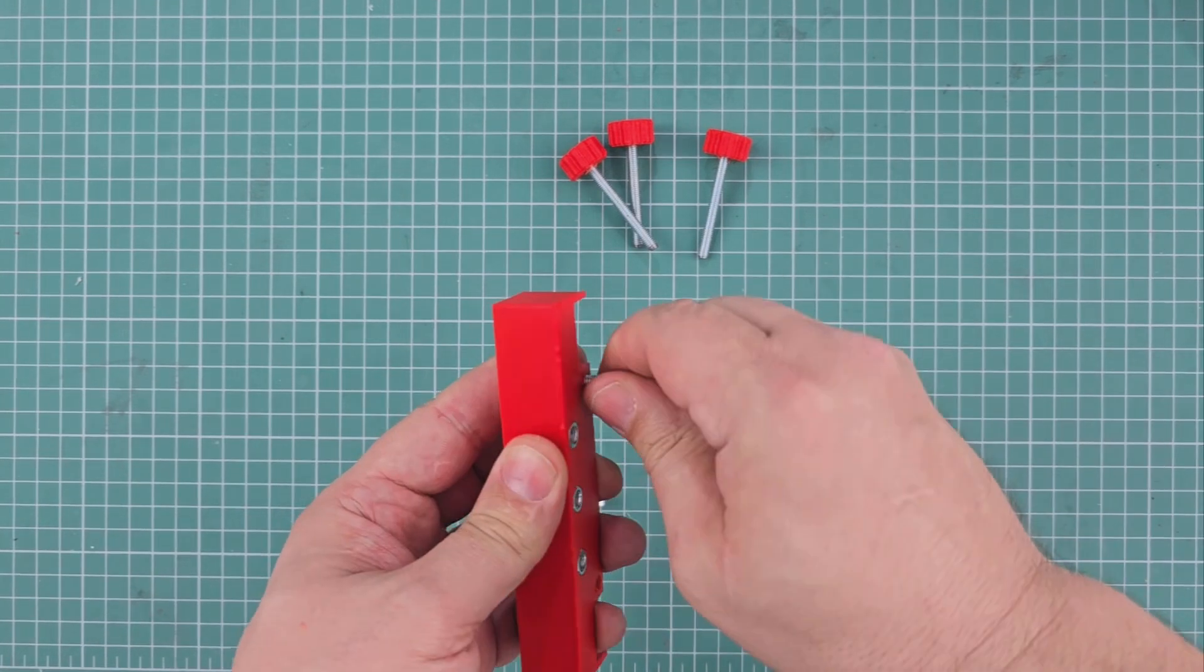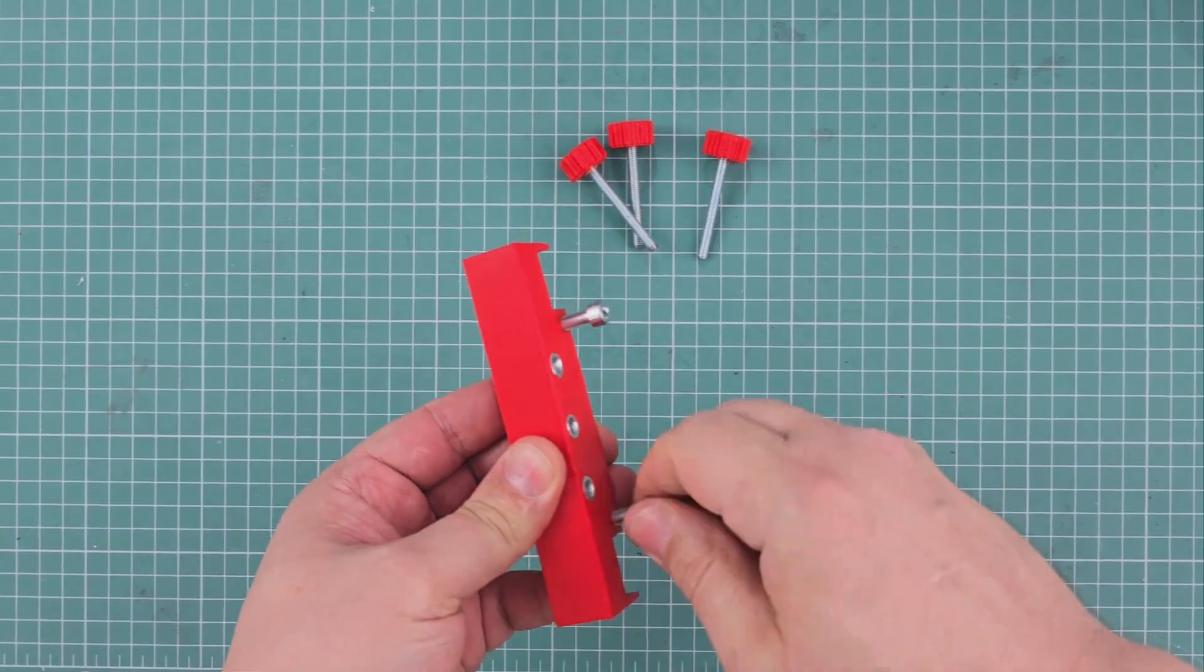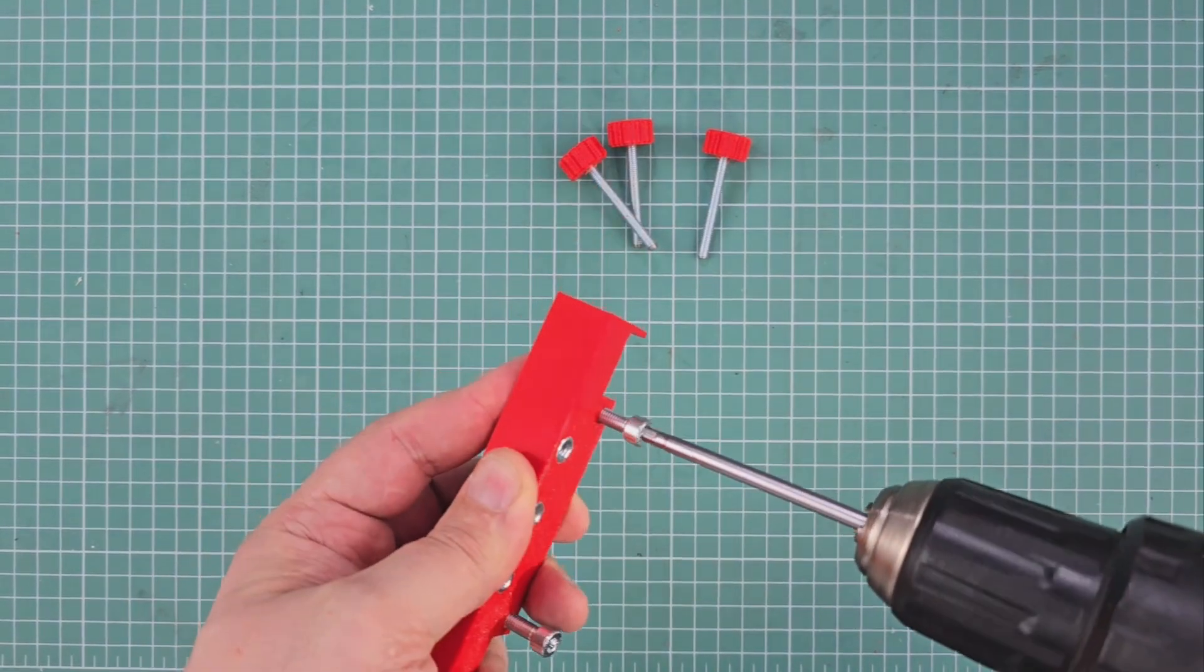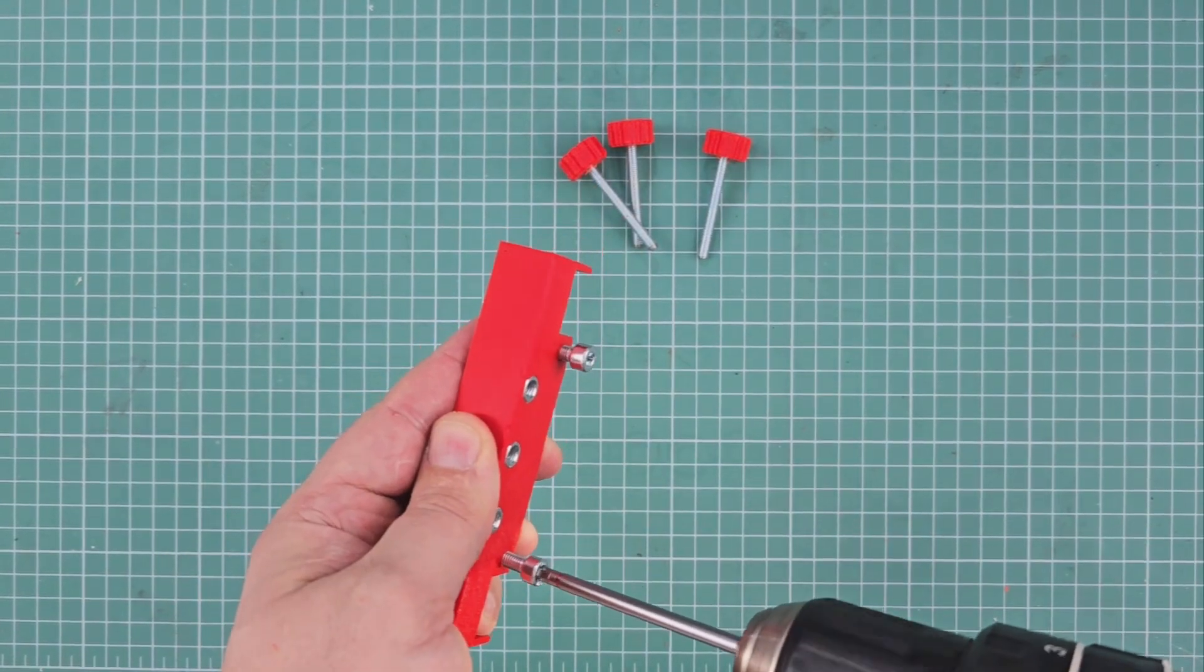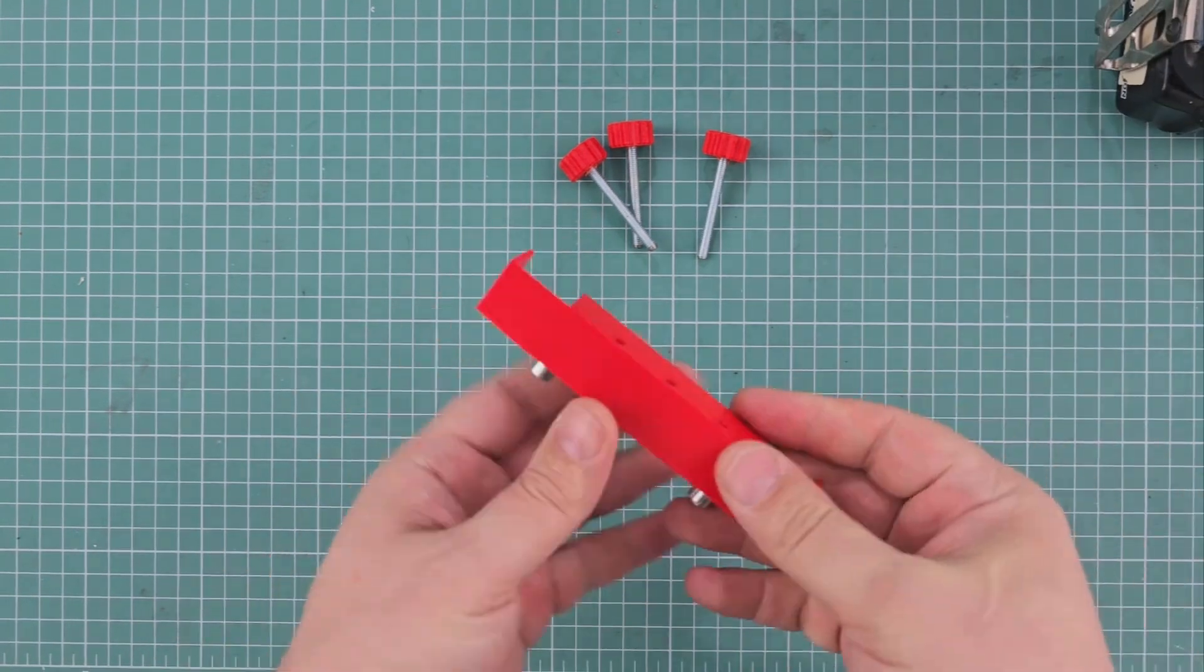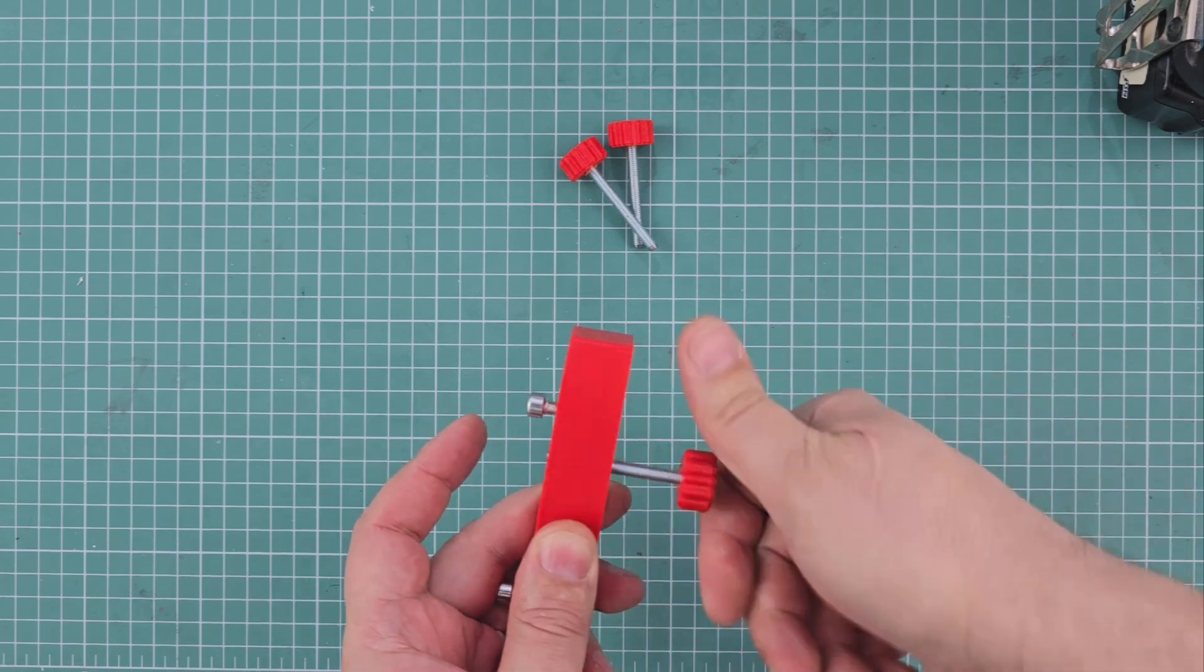This is the quick release header. It uses these bolt heads as alignment guides that will match with their corresponding holes in the tool body. Next I'm installing the tensioning knobs into the quick release header.